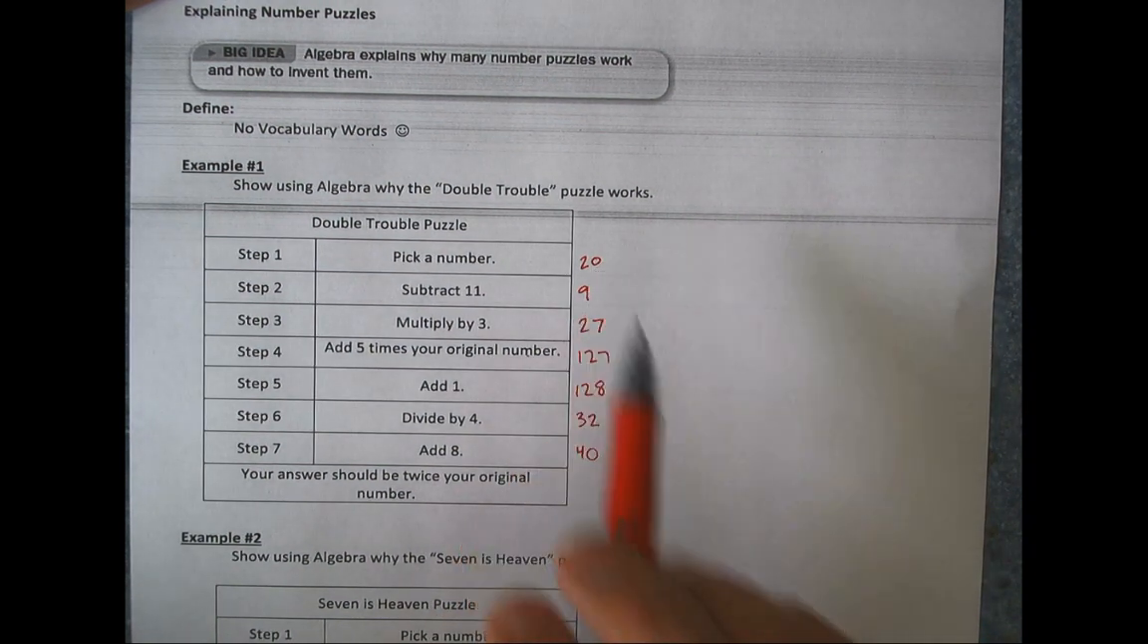Divide by 4. So I'm dividing this by 4. You can use a calculator that comes out to 32. Add 8. I'm at 40. And this whole puzzle says your answer should be twice your original number. My original number was 20. Now I'm at 40. So it worked.